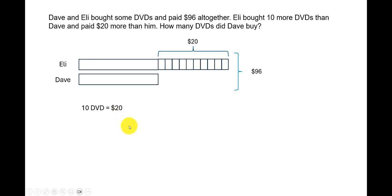So 1 DVD is equal to $20 divided by 10, which is $2. We've got the cost of 1 DVD.